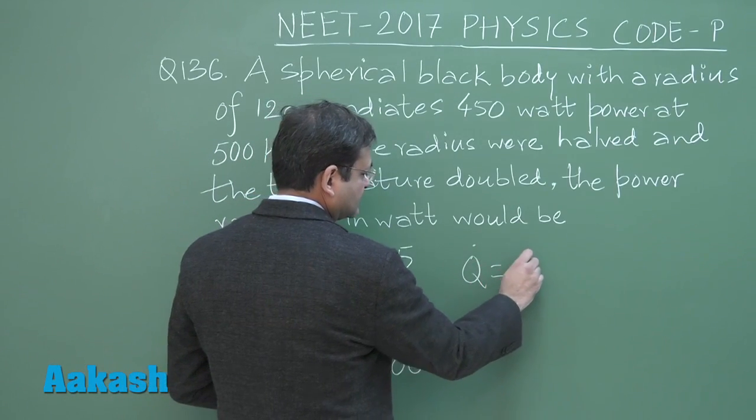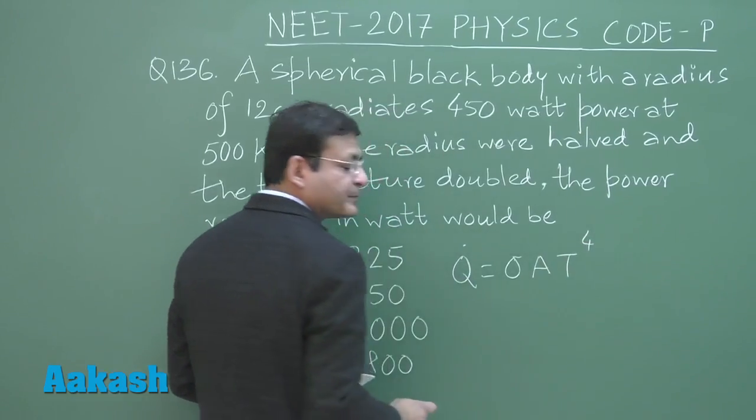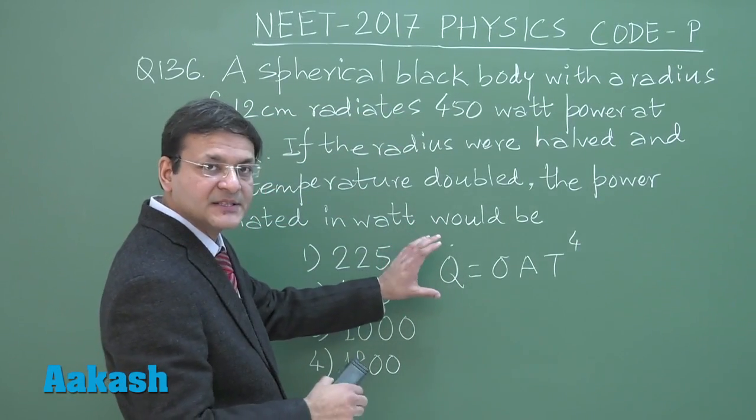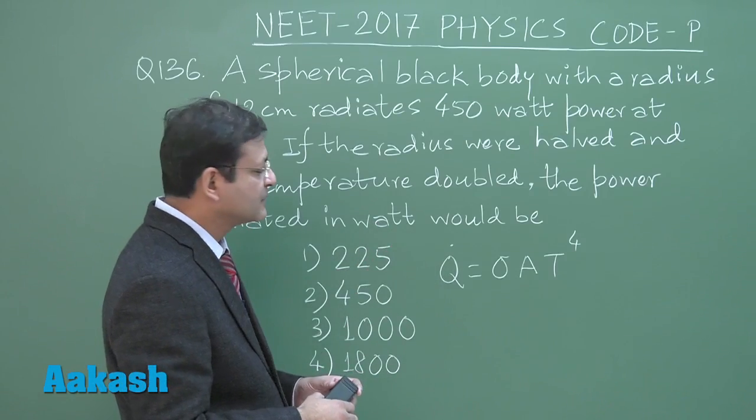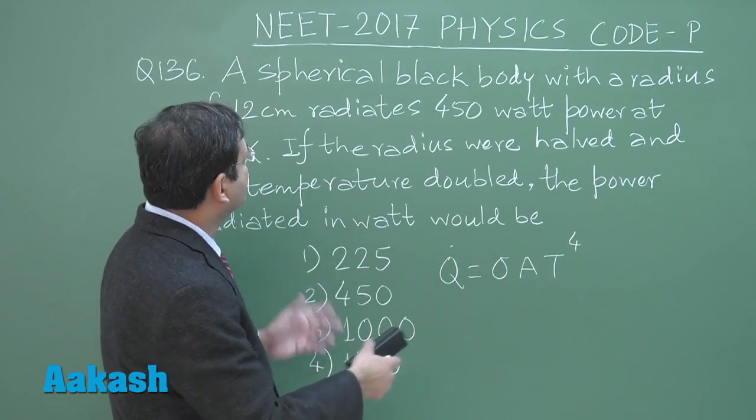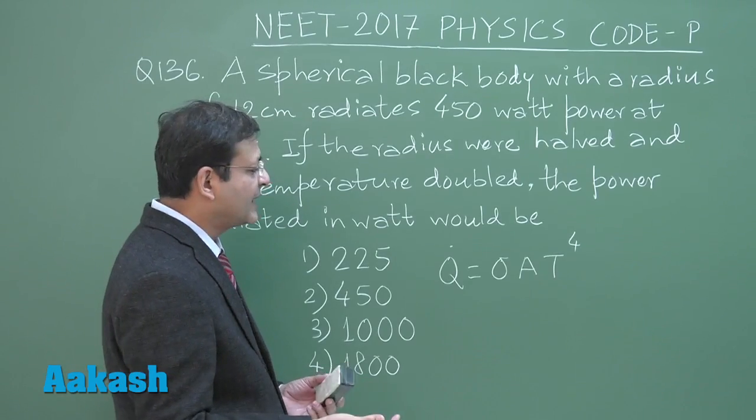What is Stephen's law? It is sigma A T raised to the power 4. Stephen's law. This is the rate of heat radiation. This is a constant. Area, area for spherical body, you can 4 pi r square.